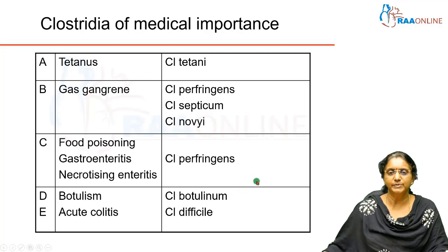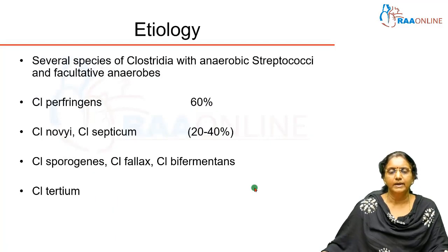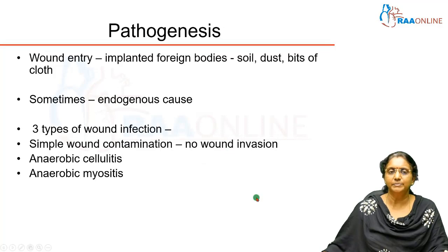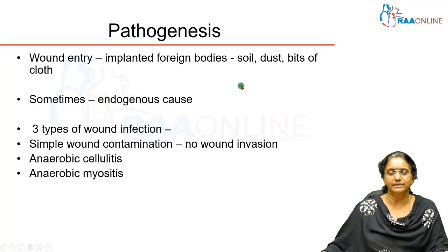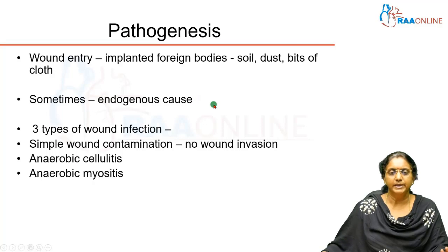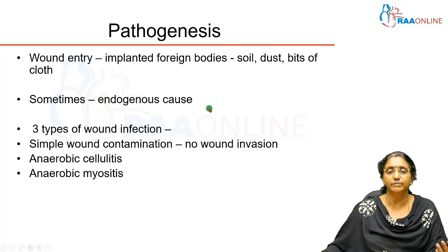Acute antibiotic-associated colitis is caused by Clostridium difficile. So you have one genus with many species of anaerobic bacteria, all capable of causing serious illnesses. Regarding the pathogenesis of gas gangrene: usually there is a massive wound with an implanted foreign body — soil, dust, or bits of cloth — and along with that, spores present in the soil enter the wound.